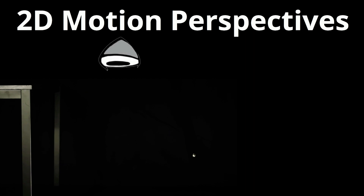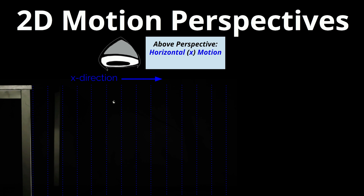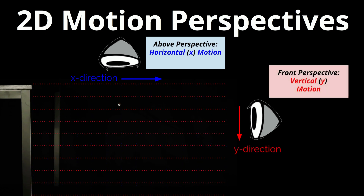Now have your students imagine viewing the same event from above the table looking down. From this perspective, the horizontal part of the motion would be the most prominent. You could tell the ball was falling because the ball would appear smaller over time, but you would mostly perceive how the ball continues to move forward through space. If you instead choose to view the event from in front of the table, where the ball was launched in your direction, the vertical part of the motion would be the most prominent. It would be easiest to perceive the ball falling down in the Y direction, rather than how it is also moving forward in the X direction.